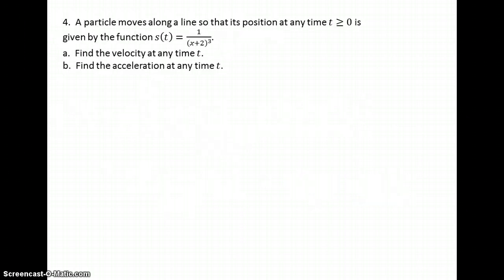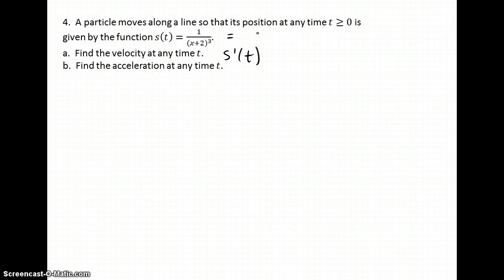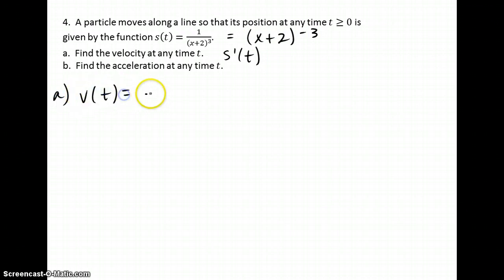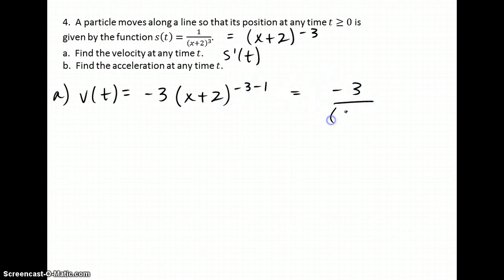If the particle moves along a line with its position at any time given by the function, find the velocity. Velocity is the derivative of the position function. For this position function, we don't need the quotient rule to derive — there's no variable in the numerator — so I'm going to rewrite it as a power rule. The velocity: bringing the exponent down and subtracting 1 from the original exponent gives the velocity function: negative 3 over (x + 2) to the 4th power — one fraction, positive exponents.